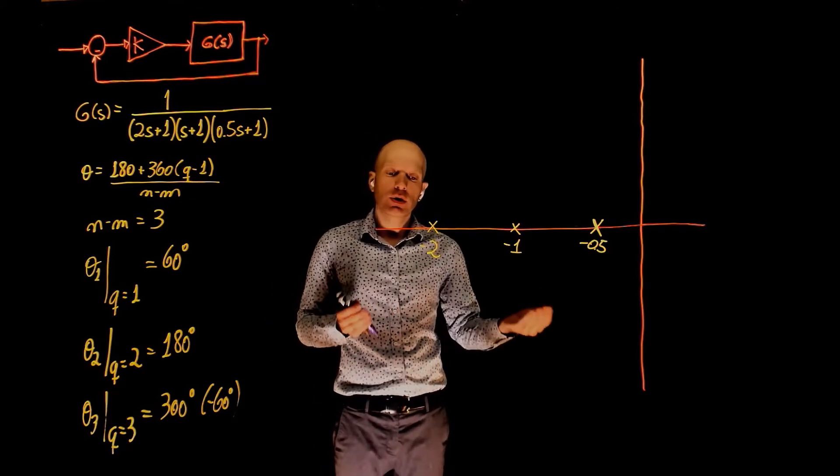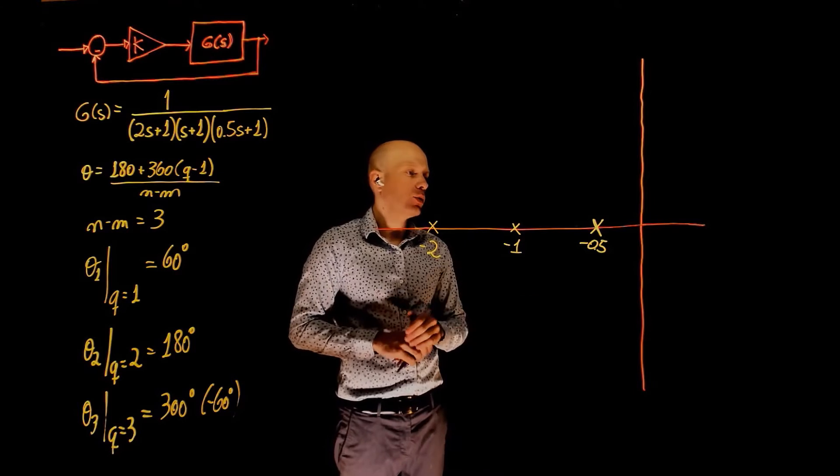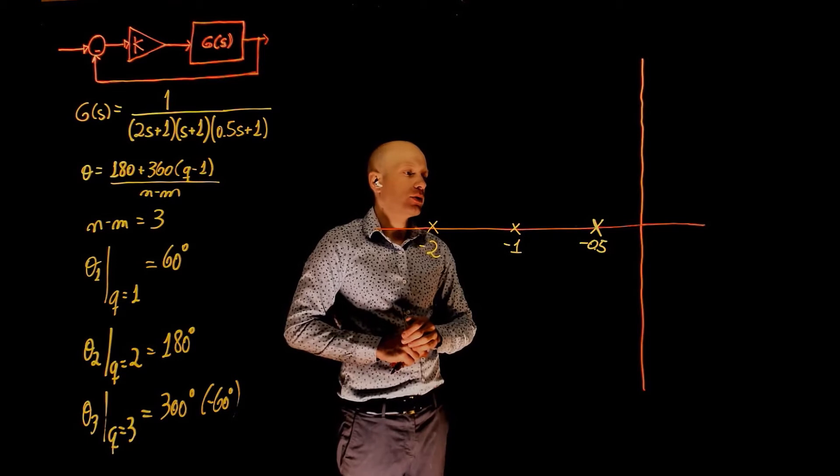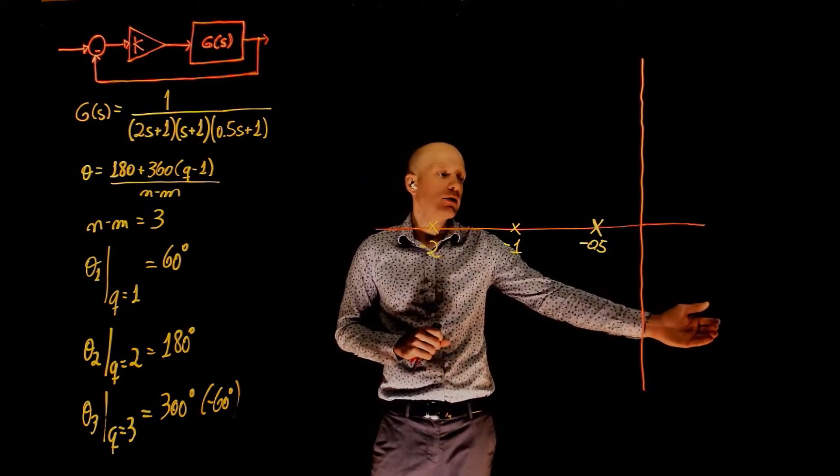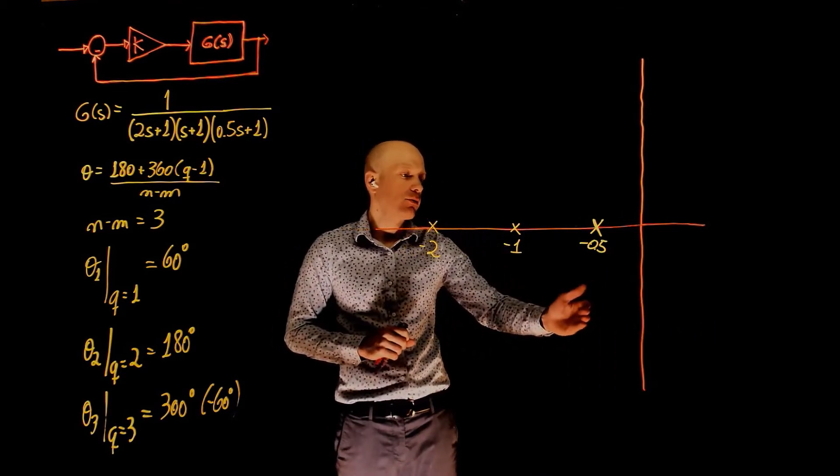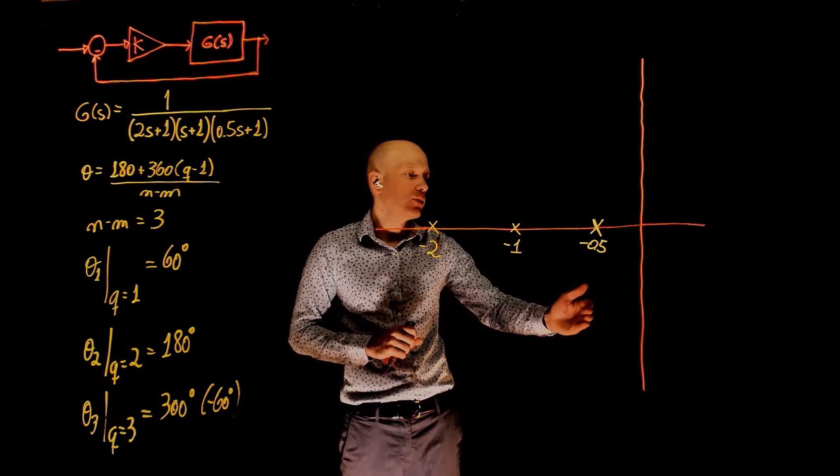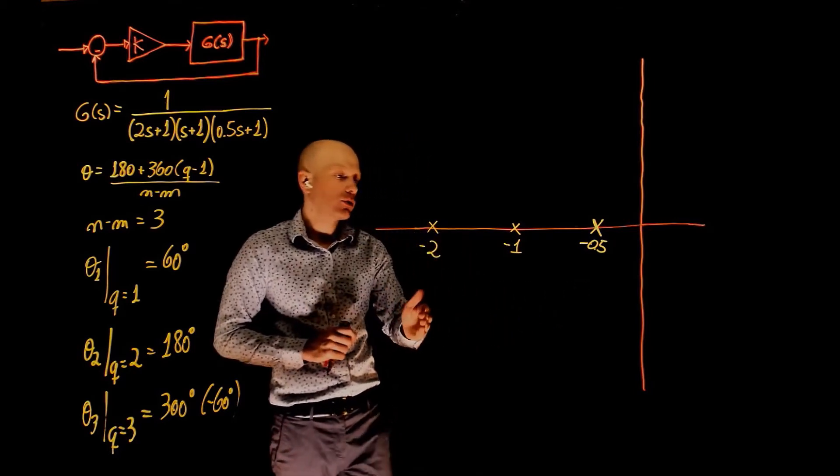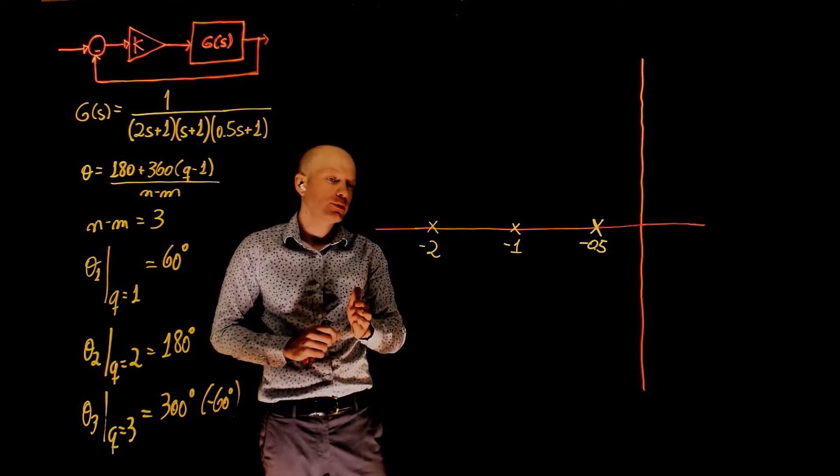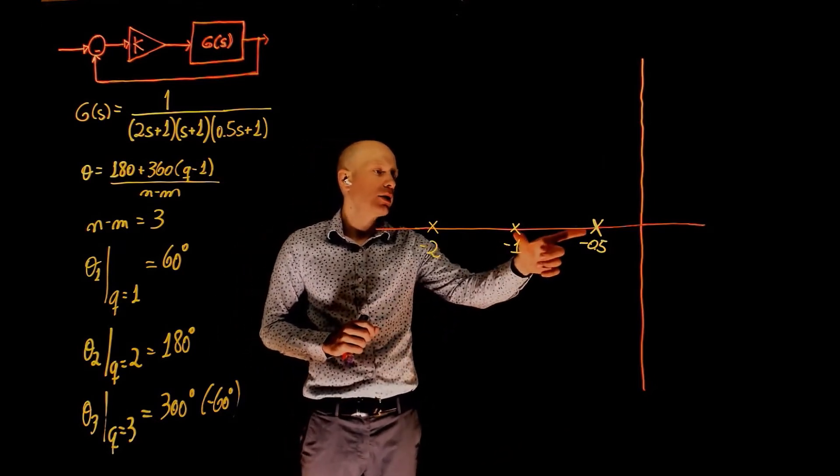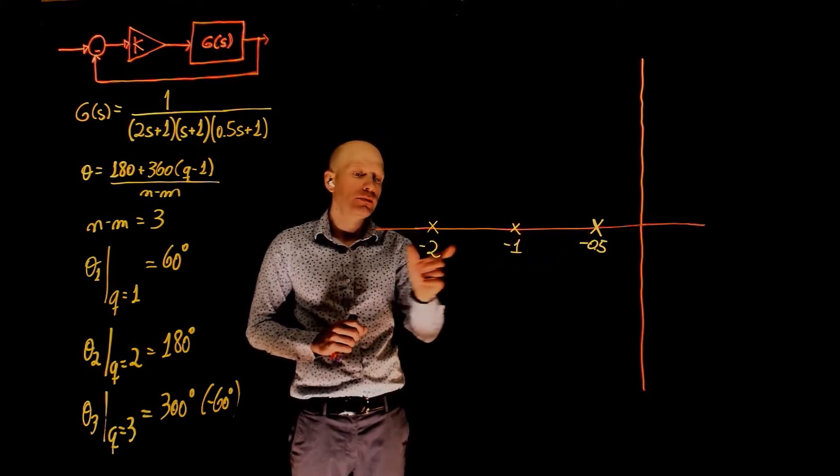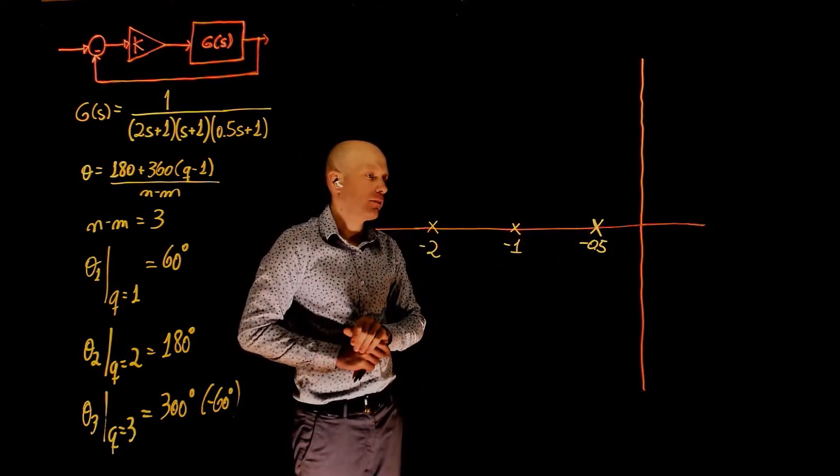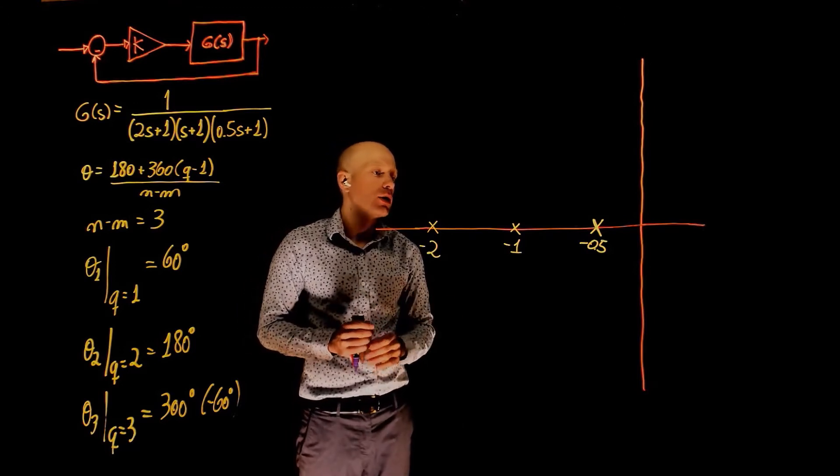Now, let's determine the locations on the real axis that have a root locus. We know that it's always to the left of an odd number of poles and zeros, so we start counting from positive infinity. Up to 0.5, we have a count of zero. Between 0.5 and 1, the count is 1. Between 1 and 2, the count is 2. And past negative 2, the count is now 3. So the odd segments are between 0.5 and 1, and between negative 2 and negative infinity. So that's where the root locus is.